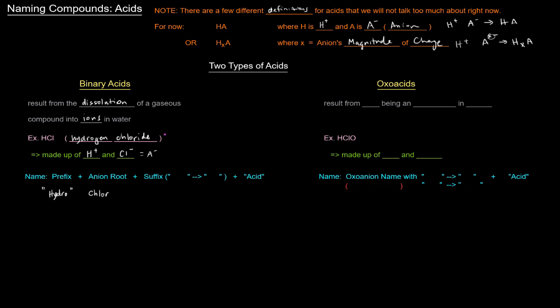So the way we'd name a binary acid is we would have the prefix hydro. The prefix is always going to be hydro. And then we'll have, right after that, we'll have the anion root. In the case of HCl, we've got chloride as the anion. So we're going to have chlore. We're going to drop the ide there. So chlore, that's the root of the anion.